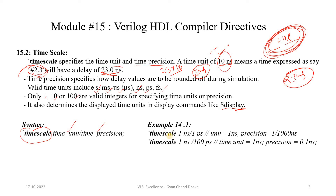The timescale compiler directive is defined as `timescale followed by the time unit and the precision value. For example, `timescale 1ns/1ps means the time unit is 1 nanosecond and the precision is 1 picosecond, which is 1/100 nanosecond. Another example, `timescale 1ns/100ps means the time unit is 1 nanosecond and the precision is 0.1 nanosecond.